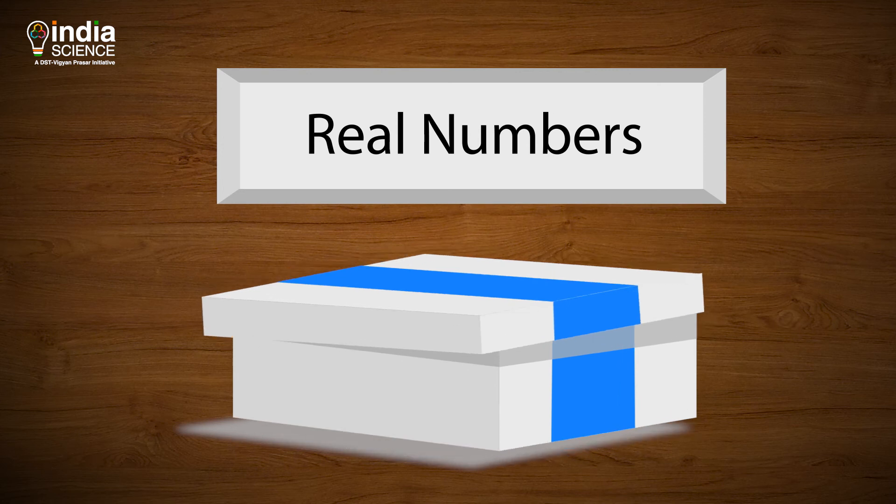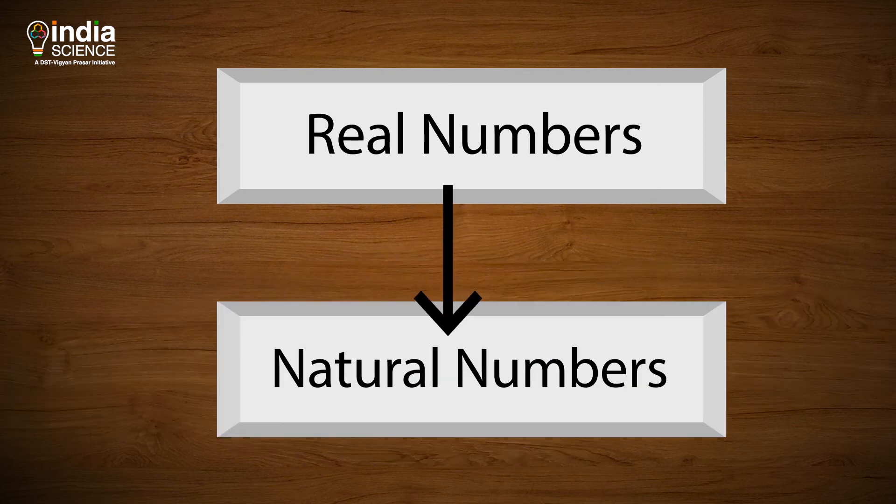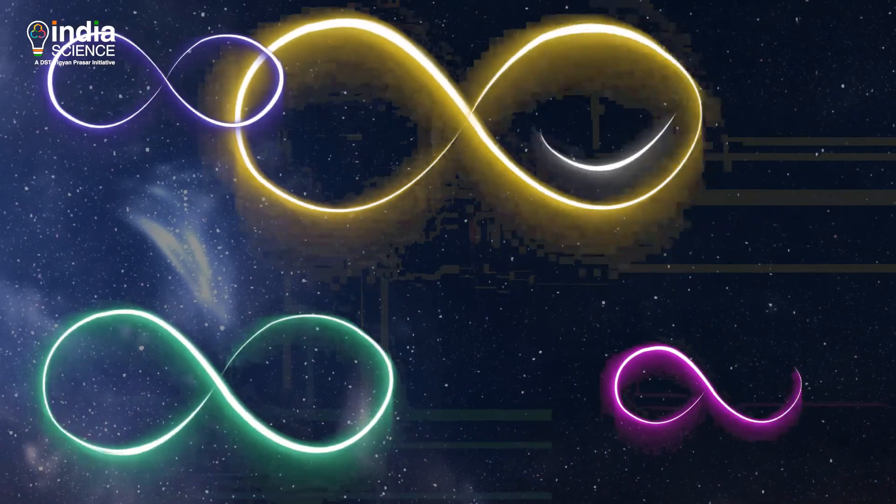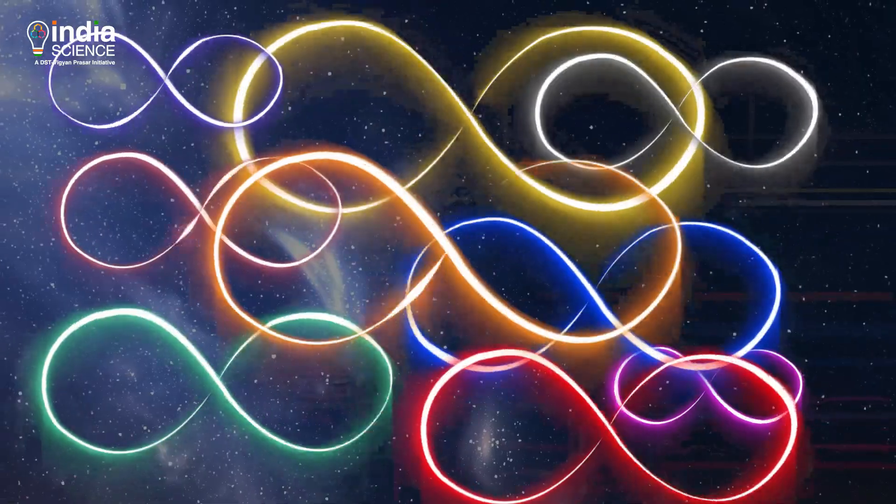No matter what we try, there is no way to make a pairing of natural and real numbers. These two sets are not of the same size. This leads to a weird realization that there must be multiple levels of infinity. And hence, this represents higher level of infinity.